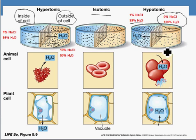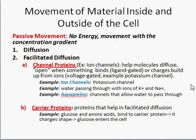The substances dissolved inside the cell — ions, sugars, and other macromolecules — create a gradient for water to travel. It's very important that cells are kept in their proper environment to maintain water balance. For passive movement, remember: no energy, and movement with the concentration gradient from high to low. We have diffusion, osmosis, and facilitated diffusion. Facilitated means to help, and there are two types of helpers: channel proteins and carrier proteins.